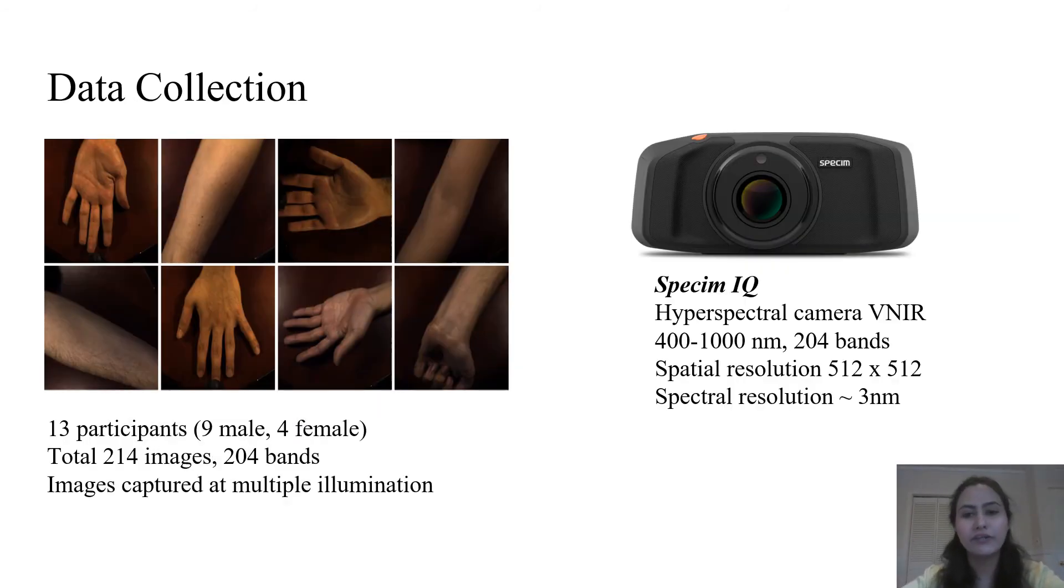As our method is data-driven, our first step is to obtain application-specific dataset. We collected our own hyperspectral data. We used the SPECIM IQ hyperspectral camera, which is a line scanning camera with a built-in scanner. This camera works in visible and near-infrared spectral range with 3nm spectral resolution providing 204 bands. We recruited 13 human subjects having 9 males and 4 females. We captured a total of 214 images in different positions including front and back of palm, wrist and upper and lower arm. We used different room lighting conditions to introduce different illumination for some subjects.